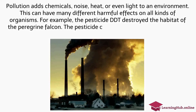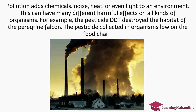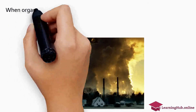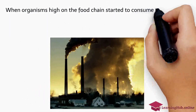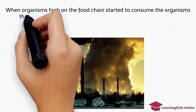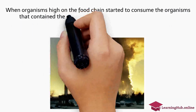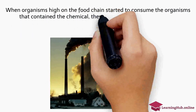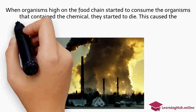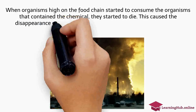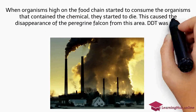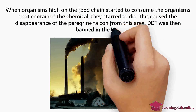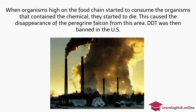The pesticide collected in organisms low on the food chain. When organisms high on the food chain started to consume the organisms that contained the chemical, they started to die. This caused the disappearance of the peregrine falcon from this area. DDT was then banned in the U.S.